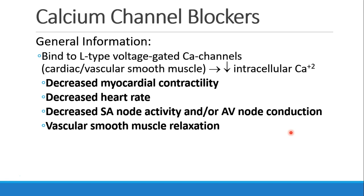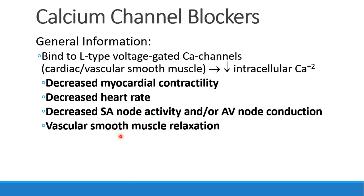The goal is to decrease intracellular calcium. When we do that, four things happen: it can decrease myocardial contractility, it can decrease heart rate, it can decrease activity of the SA node or conduction through the AV node, and it can cause relaxation of vascular smooth muscle.